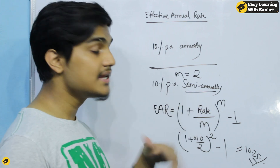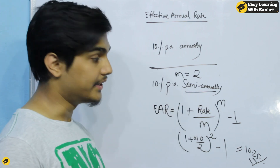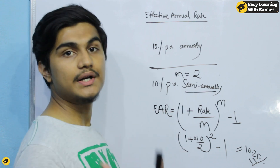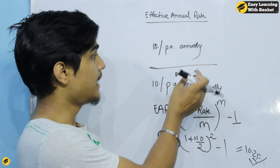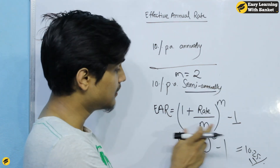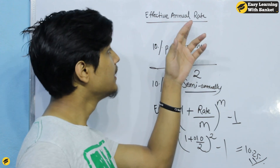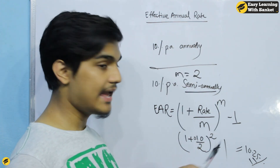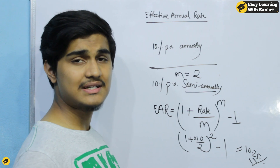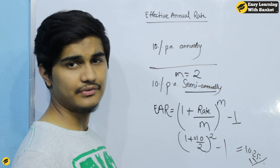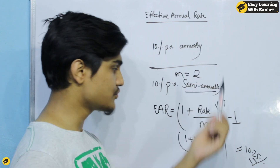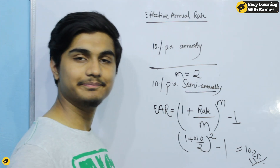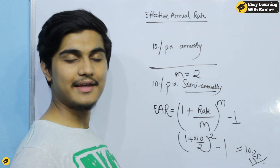Semi-annually gives a 10.25% return per year — that's the difference. Annual, quarterly (m = 4), and other frequencies all give different EARs. The effective annual rate is not the same as the APR (average percentage rate). Even if the stated rate is the same, the EAR will be bigger with more frequent compounding. Thank you for watching.